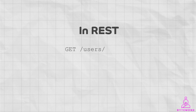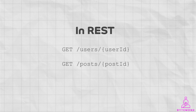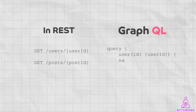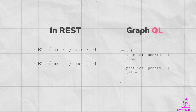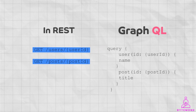Here is an example. In REST, a request will return the full user object and the full post object. However, if you only need the user's name and the post title, in GraphQL you need only a single query to return a single response with the user's name and the post title. In REST, the structure of the data is defined by the resources, whereas in GraphQL the structure of the data is defined by the schema.